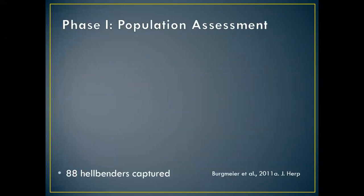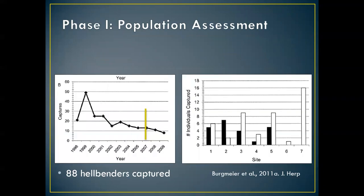The very first thing we had to do with this conservation program is to understand the resource that we had — how many Hellbenders do we have on the landscape and how they're distributed? So we surveyed the same sites that the Department of Natural Resources has surveyed since 1998. You can see that since 1998, with the exception of one year, Hellbender populations have been in decline, and my team came on board in 2007. Since that time, Hellbenders have continued to decline at those same survey sites over the last decade or so.